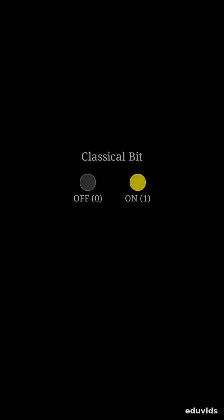Think of a classical bit like a light switch. It's either on, representing one, or off, representing zero. Simple, right?